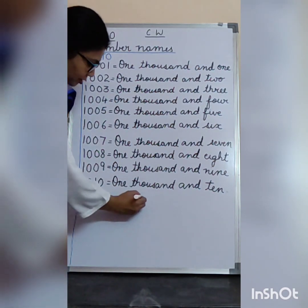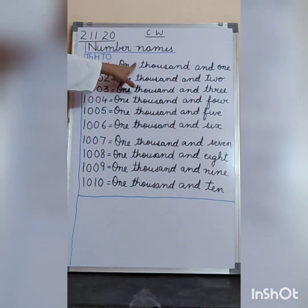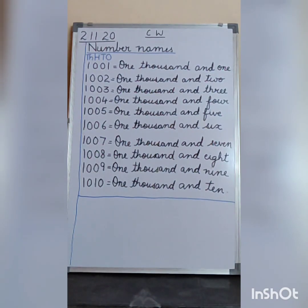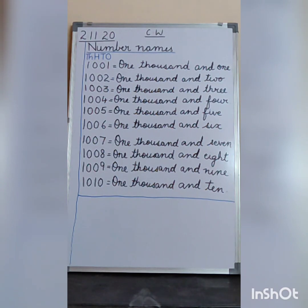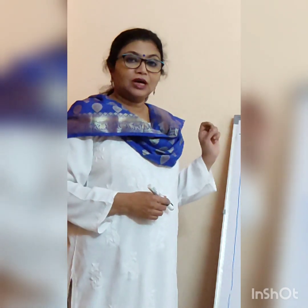Then you write 1000 and 9. Make sure that you leave a box in between, leave a line in between and write. Leave one finger space in between your words. Now we have written number names from 1,001 to 1,010.